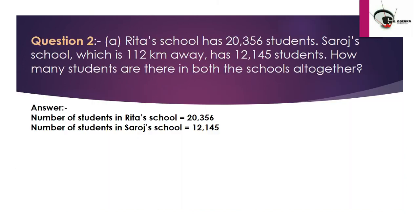Part A: Rita's school has 20,356 students. Saroj's school, which is 112 km away, has 12,145 students. How many students are there in both schools altogether? Notice that 112 km is given, but do you think the distance is required to find the total number of students? No, it is not required at all.